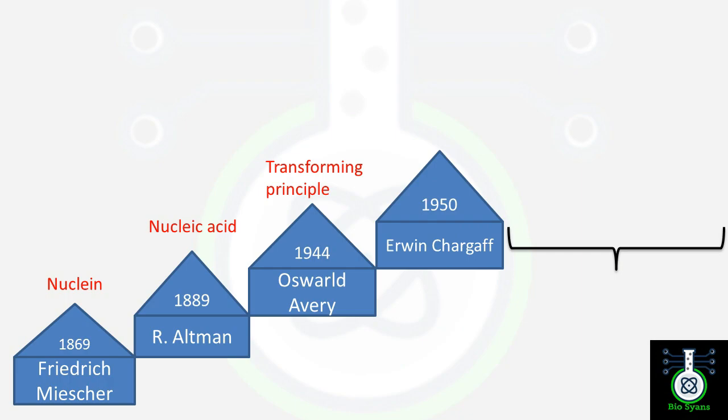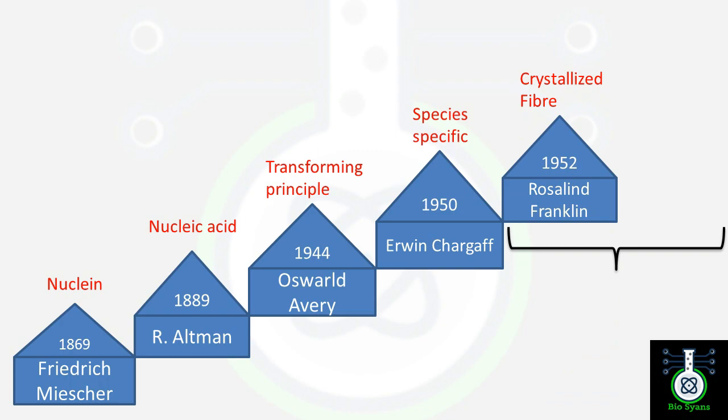When the asymmetric ratio is more than one, it will be featured for higher organisms, whereas when it is less than one, it will be found in lower organisms. Next was Rosalind Franklin in 1952 who provided crystalline DNA fiber, and with the help of that...